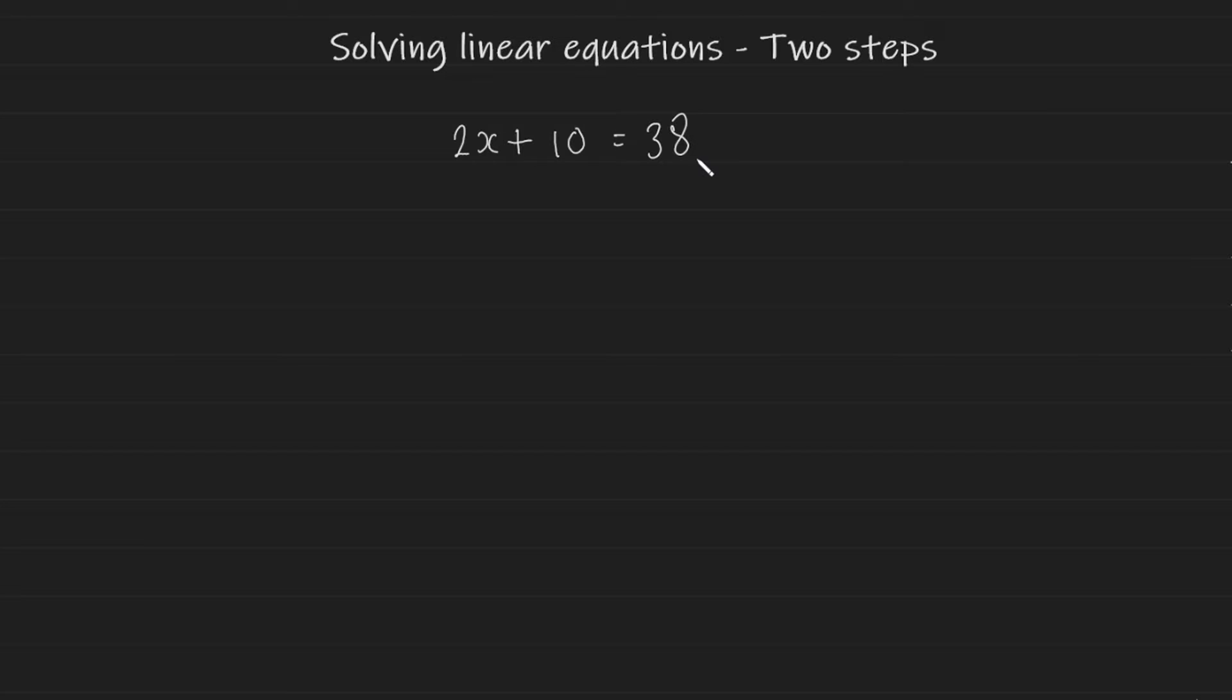So let's begin. First things first, you have an unknown x and you have numbers attached to it. You have a 2 being multiplied to it and a 10 being added to it. Your goal is to get the x to be isolated. You want to get the x on its own.